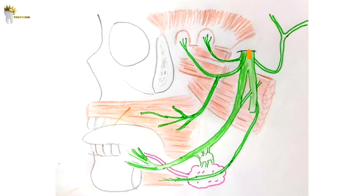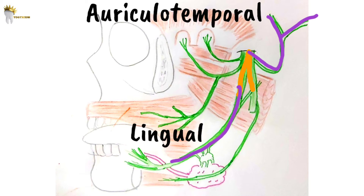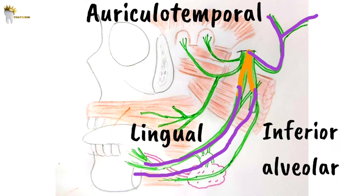The posterior division of the mandibular nerve travels downwards, medial to the lateral pterygoid muscle — the muscle has been removed here so that the nerve can be visualized. This posterior division has three branches: auriculotemporal, lingual, and inferior alveolar.